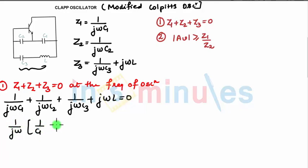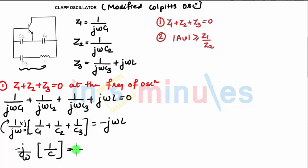So if I take 1 upon j omega common, 1 upon C1 plus 1 upon C2 plus 1 upon C3 equals minus j omega L. This we can write as minus j upon omega. Multiplying and dividing by j, j squared will be minus 1.